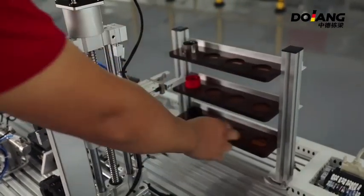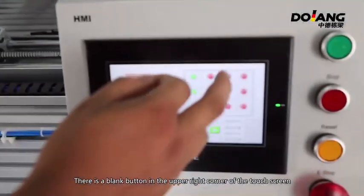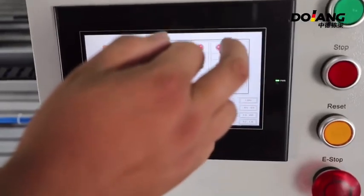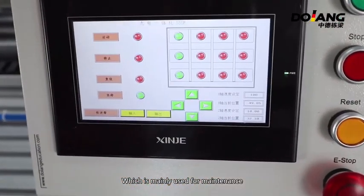There is a blank button in the upper right corner of the touch screen, which is mainly used for maintenance. We enter the screen.